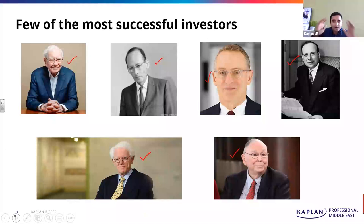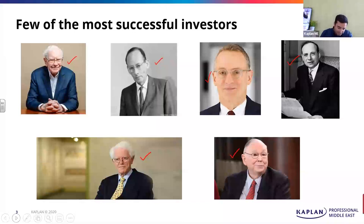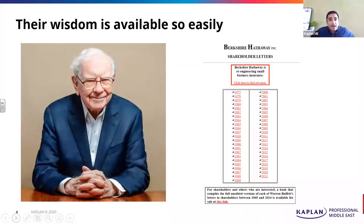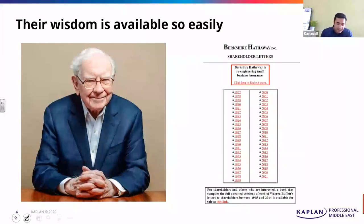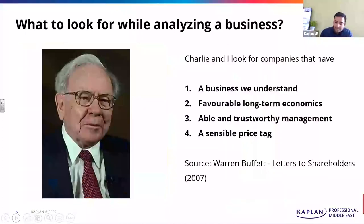Slowly, we are going to learn a style of thinking. And once we have that style of thinking, financial statements will start making sense. I'm going to refer a lot to Warren Buffett's style of thinking. In his letters to shareholders, maybe six or seven times, he has said — Charlie and I look for companies that have four parameters. One: a business we understand.